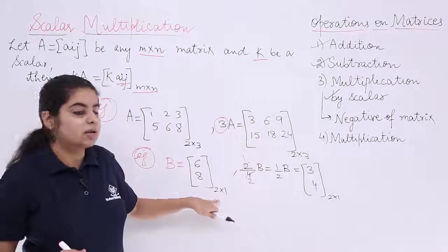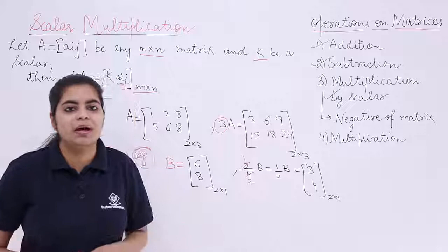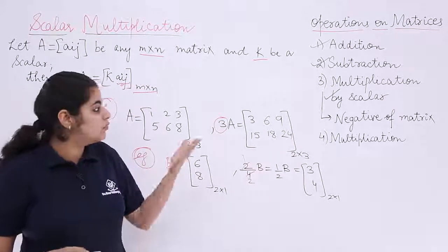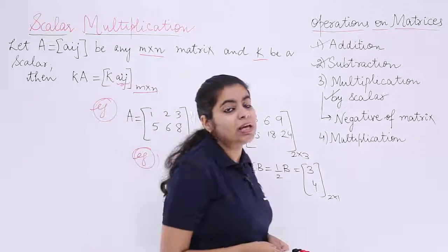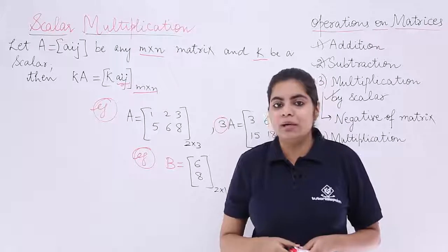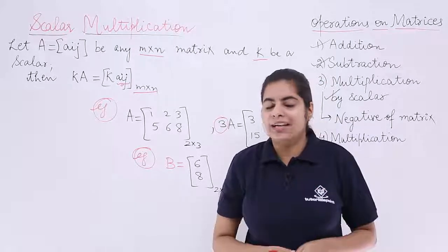So the answer is three, four which is two rows and one column. Again, the order was two by one, the order is two by one. So in this video we saw the scalar multiplication concept. Whenever a given scalar is given, I have to multiply by the matrix - each element to be multiplied keeping the order intact.